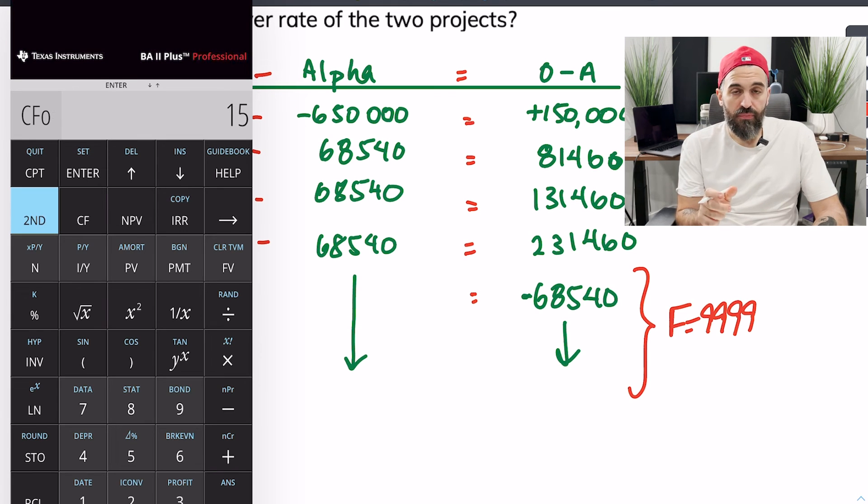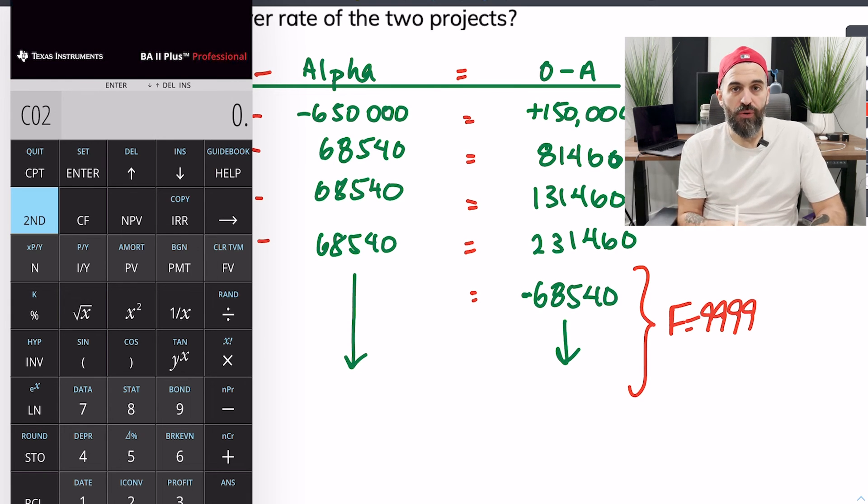So next you'll see me open my financial calculator and enter my cash flows and I'm going to be using the differential column. I'll be entering those into the cash flow and solving for the internal rate of return of that column and that'll be my crossover rate. Now I've entered the cash flows, I'll press IRR compute. So we get a crossover rate of 10.146%.